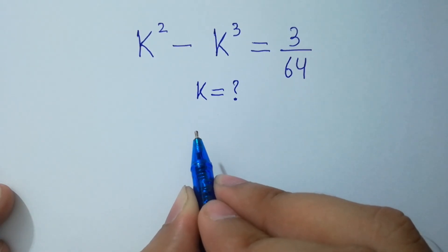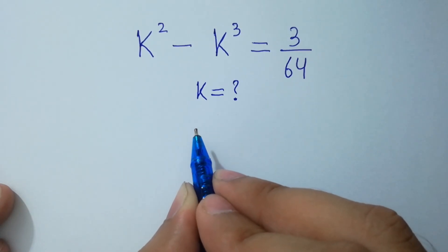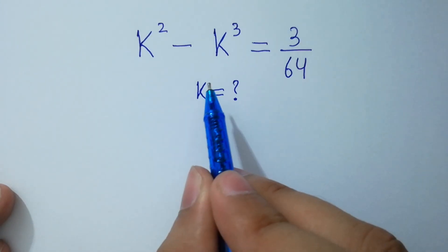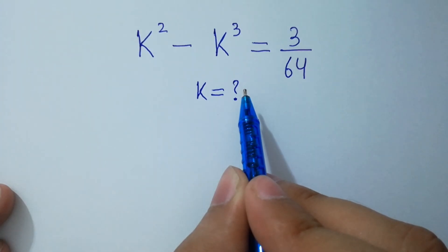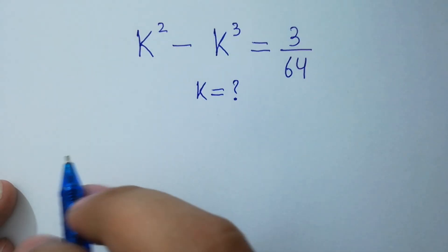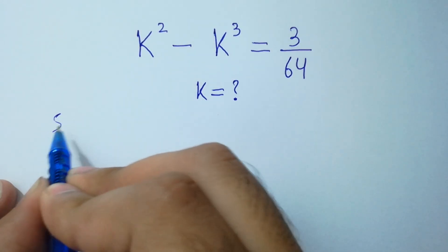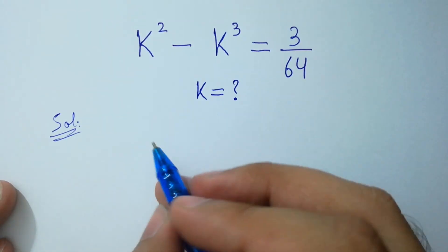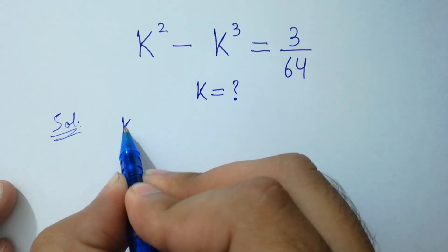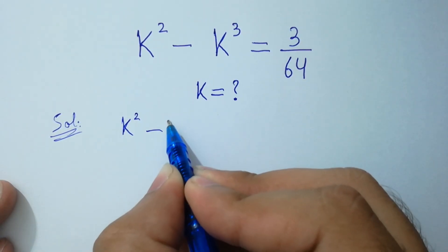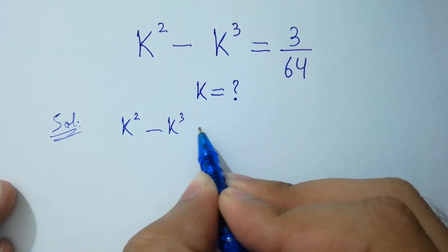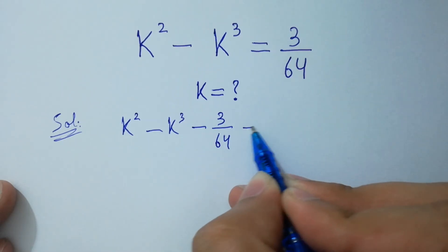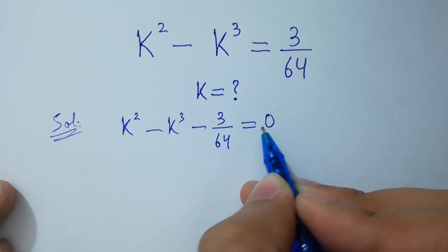Hello friends. Find the value of k if k squared minus k cubed equals 3 over 64. Let's solve it. It will be equal to k squared minus k cubed minus 3 over 64 equal to 0.